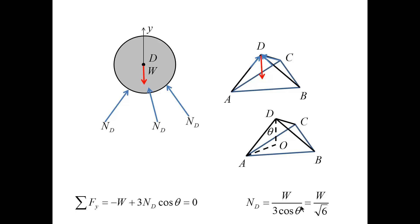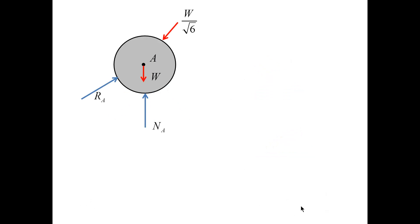Now, given the force N sub D, I can proceed to the free-body diagram of one of the lower balls. I will take the ball A, and this ball is subjected to the following forces: the force exerted by the top ball, the weight, the reaction of the floor, and the reaction of the wall. Because the top ball opens the gaps, there are no forces exerted by the other two balls, the balls B and C.